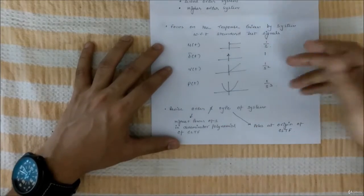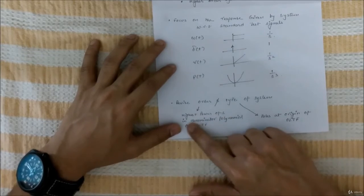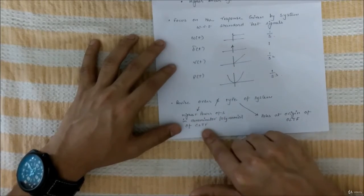If you want to revise order and type of a system, you can revise. But still I'll tell you that highest power of s in denominator polynomial of CLTF is order, and poles at origin of OLTF are type of the system.